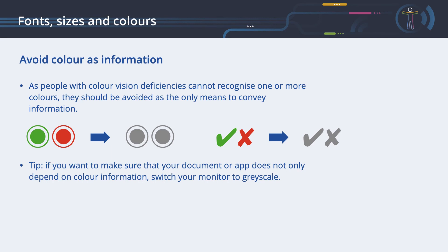A tip: if you want to make sure that your document or app does not only depend on color information, switch your monitor to grayscale. For more information, see the color section in the assistive technology chapters of the individual operating systems — you can find the links below the video.